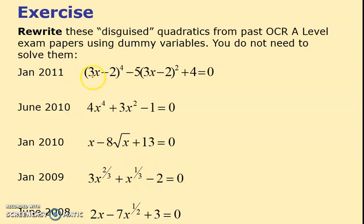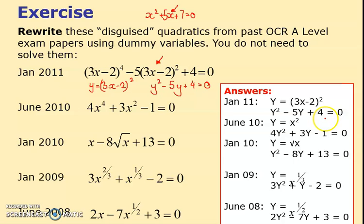First of all, let's talk about this dummy variable. You look at this term here, this is what we have as our main letter and then we square it. So this is our important dummy variable. I'm going to write y equals 3x minus 2, and because this term has got a square, I'm just going to write y squared minus 5y plus 4 equals 0. Hopefully this first one looks like y squared minus 5y plus 4 equals 0.